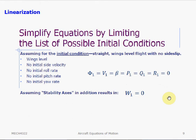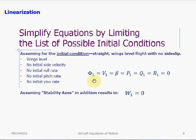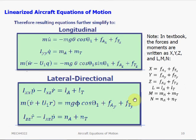We can further simplify our equation by specifying some initial conditions that make the problem simpler. We assume the aircraft is initially flying at a trim condition — straight, wings-level flight with no sideslip. This implies there will be no side velocity, no roll rate, no pitch rate, and no yaw rate. With this assumption, we can denote that the initial steady state bank angle, side velocity, sideslip, roll rate, pitch rate, and yaw rate are all equal to zero. We can further assume that if we're working in the body-fixed stability axis, the vertical velocity is also zero. These simplifications lead to much simpler linearized equations of motion.